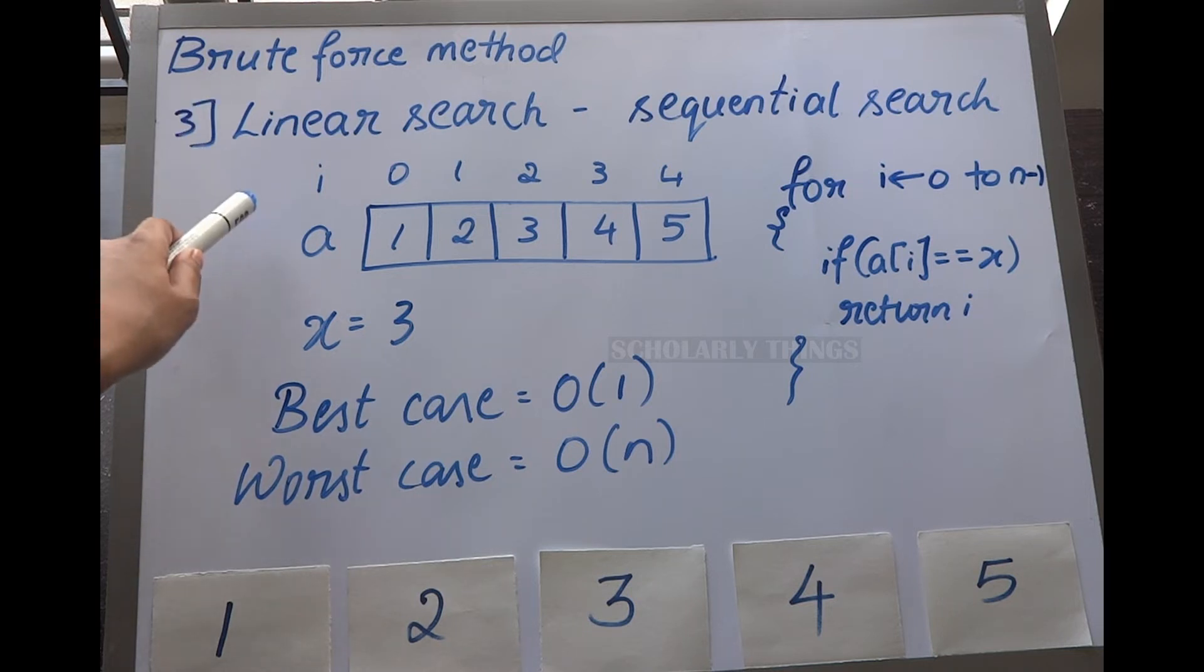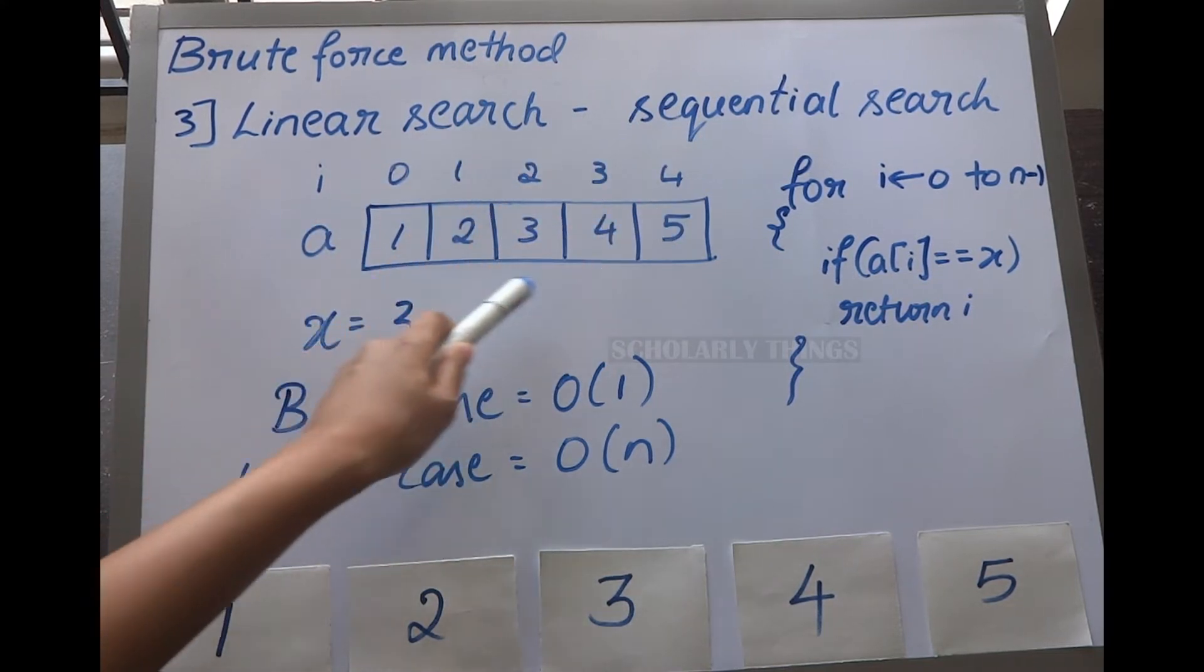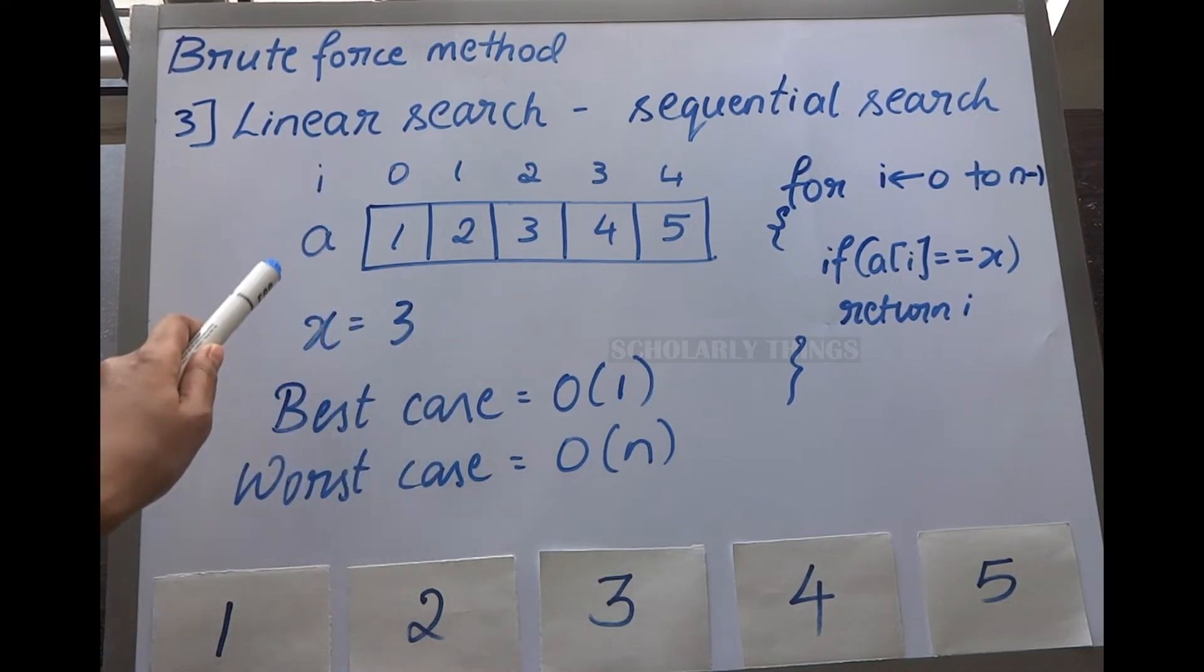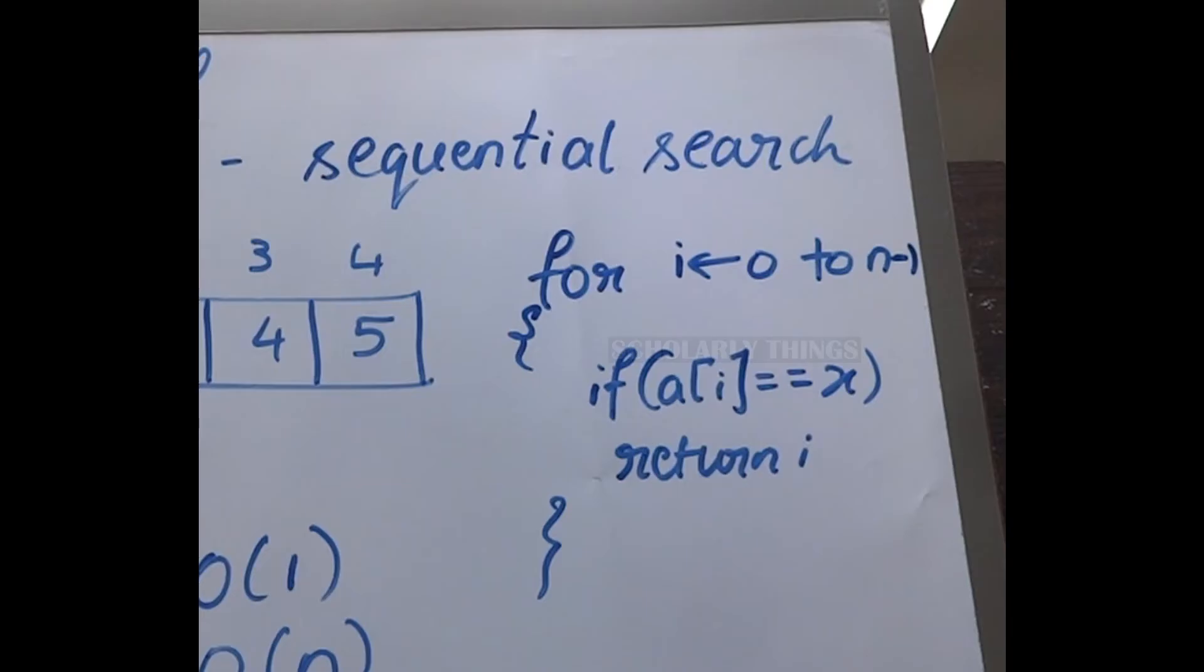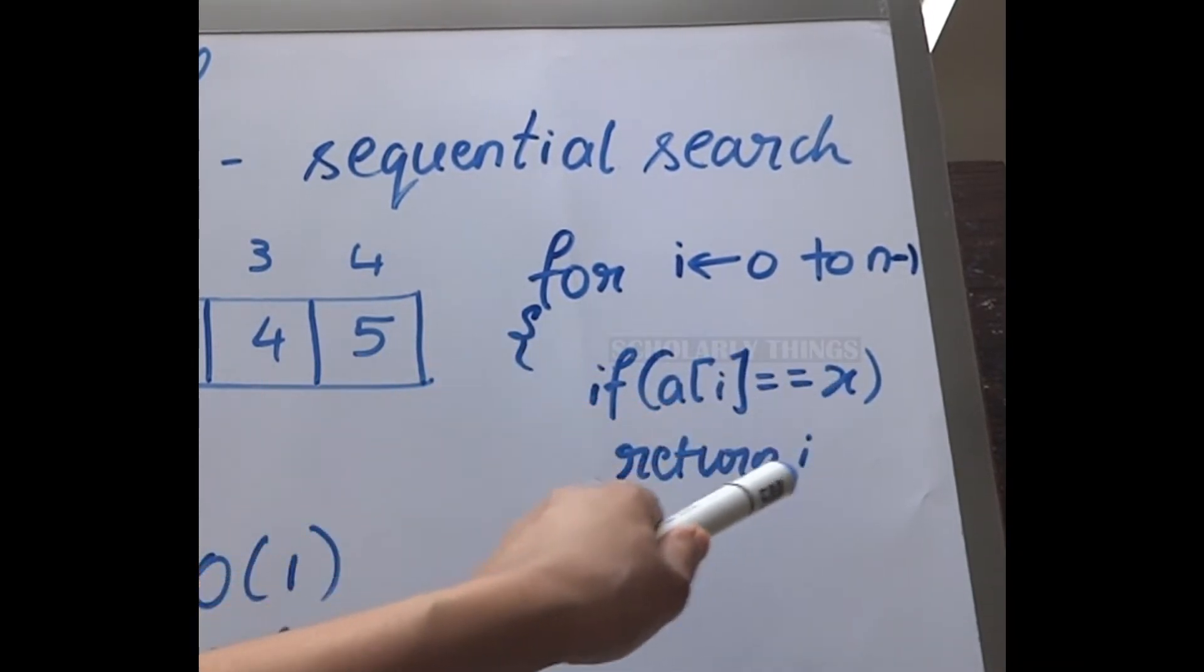Linear search is a search algorithm under the brute force method. It performs a sequential search on all elements of the array, one by one, until the element is fetched. The pseudo code looks like this: for i equals 0 to n-1, if a[i] equals x, then return i.